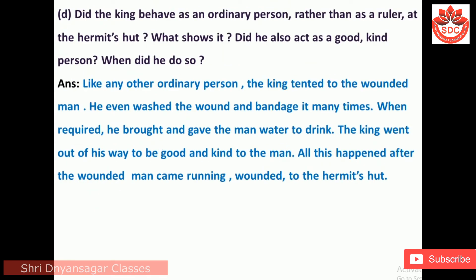D. Did the king behave as an ordinary person rather than as a ruler at the hermit's hut? Did he also act as a good, kind person? When did he do so? Answer: Like any other ordinary person, the king tended to the wounded man. He washed the wound and bandaged it many times when required, and brought the man water to drink. The king went out of his way to be good and kind. All this happened after the wounded man came running and wounded to the hermit's hut.